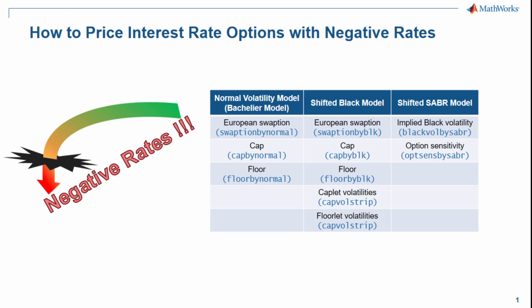By using MATLAB and the Financial Instruments Toolbox, you can easily use the normal volatility model, shifted Black model, and shifted SABR model to price interest rate options in a negative interest rate environment — for example, caps, floors, and swaptions. You can also extract implied volatility from these options.